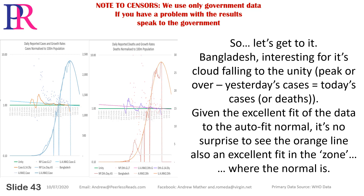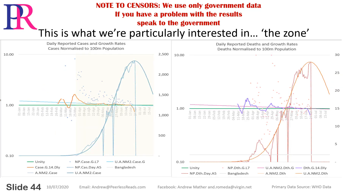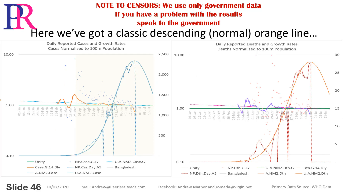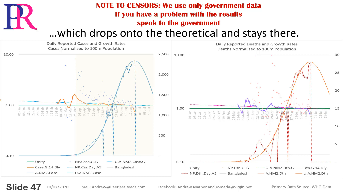Bangladesh: interesting for its cloud falling to the unity peak — where yesterday's cases equals today's cases or deaths. Given the excellent fit of the data to the autofit normal, it's no surprise to see the orange line also an excellent fit in the zone where the normal is. This is what we're particularly interested in — the zone, highlighted in yellow. Cases or deaths have started to rise, so we're into the contagion proper. Then we're looking for that mythical exponential — dailies climbing to heaven with constant growth rate — or that pretty universal normal, where data fits the autofit well and actual growth rates, orange and purple, match the autofit decline line, pale blue and pink. Here we've got a classic descending normal orange line which drops onto the theoretical and stays there.